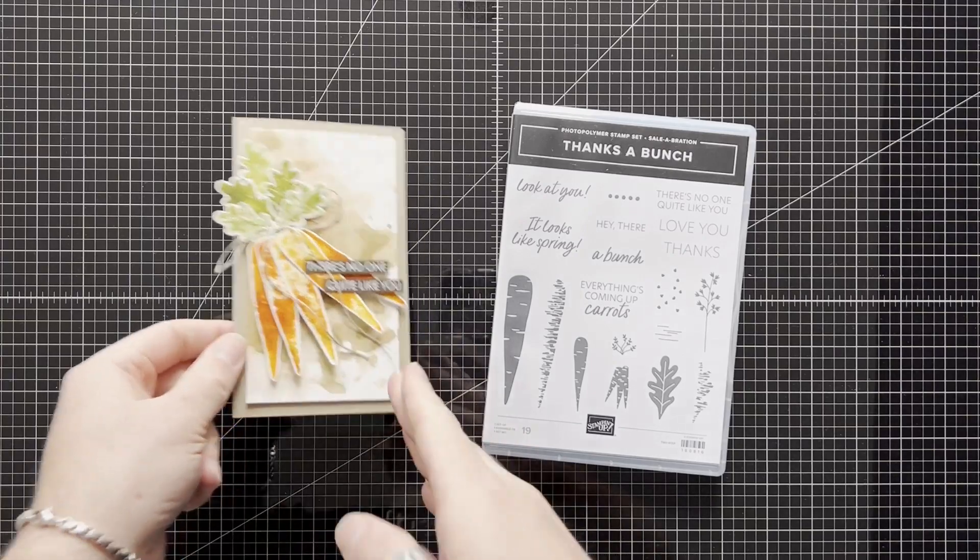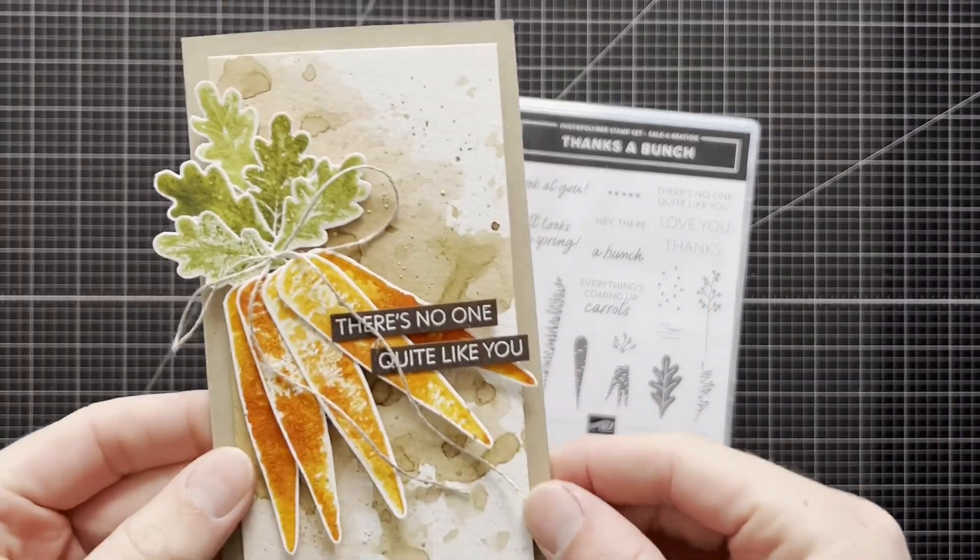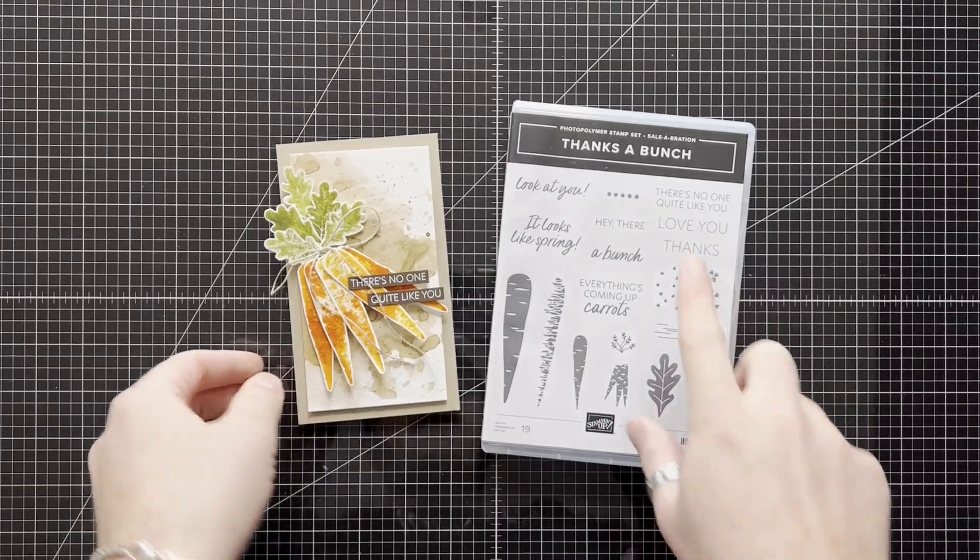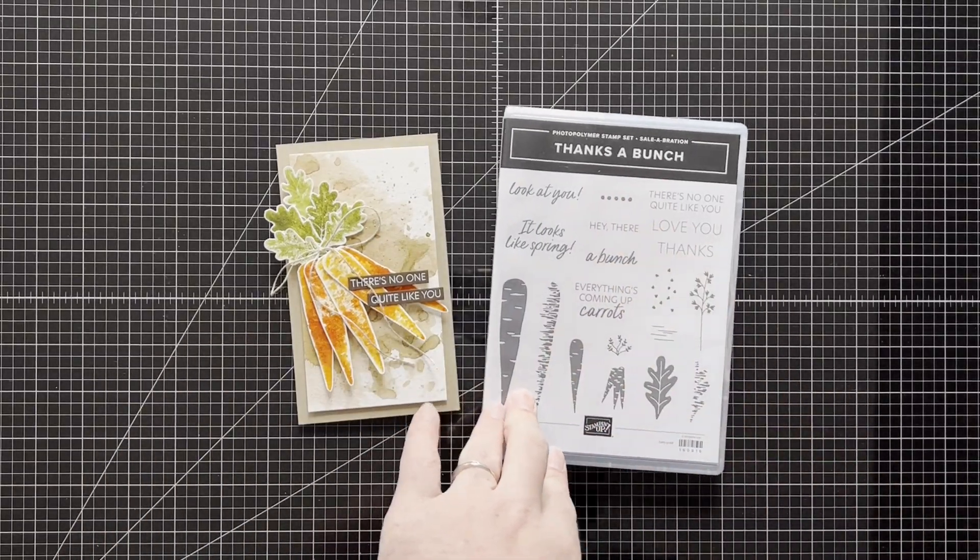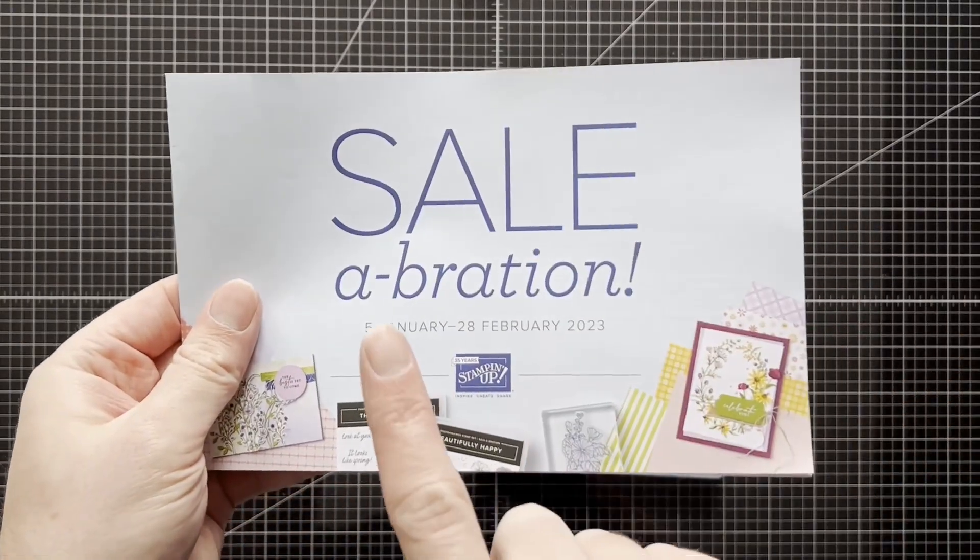And that basically means I sell the products for you to make these awesome cards. So this card is using the Thanks a Bunch stamp set, which is going to be available in the Celebration catalogue that starts July 5th.